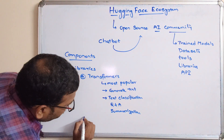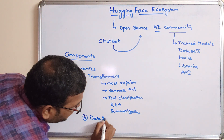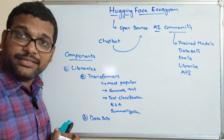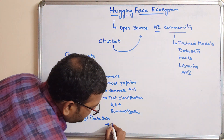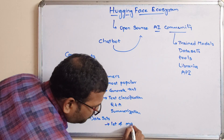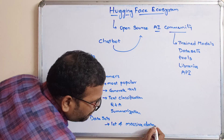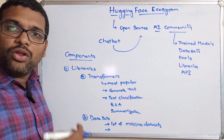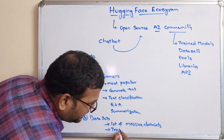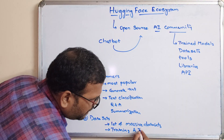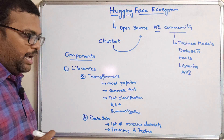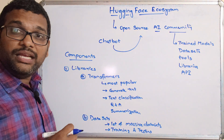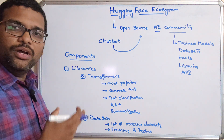The second library is Datasets. A dataset is a collection of large amounts of data. The Hugging Face ecosystem has a lot of massive datasets, and these datasets are used to either train the model or test the model — so they are used for training and testing. All the data is stored in a standard format, which makes it very easy for researchers to use these datasets.